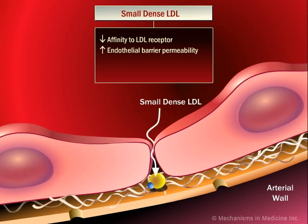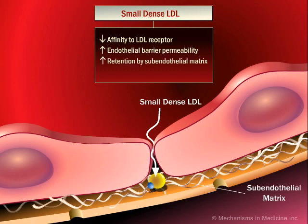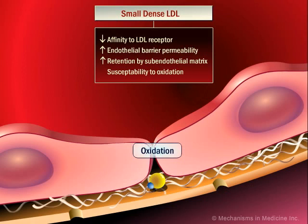Small-dense LDL particles have a higher permeability through the endothelial wall. Once in the sub-endothelial matrix, another key feature of cardiovascular disease progression occurs — the increased retention of small-dense LDL particles. These retained particles remain in the sub-endothelial matrix for a sufficient amount of time to undergo further modification. Specifically, these retained small-dense LDL particles are susceptible to oxidation and become oxidized small-dense LDL particles.